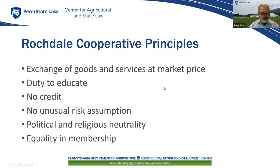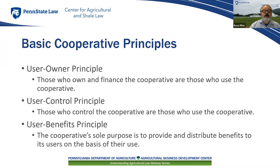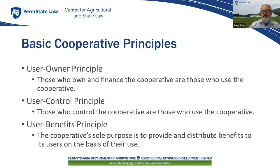When we look at cooperative principles today, we have three user principles: user-owner, user-control, and user-benefits. Those who use the cooperative are those who own it, control it, and benefit from it. Everything the cooperative does circles back to the members of the cooperative.